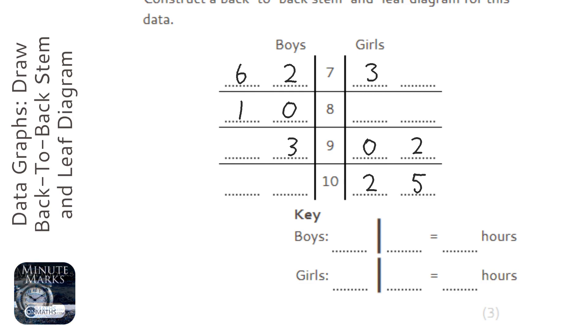I'm going to do the key for the girls first. I'm just going to pick a value - you don't even need to have a real value. So I'm going to pick the first one: 7 line 3 equals 73 hours. The reason we have a key is 7 line 3 could mean 7.3. Obviously, it doesn't on our stem and leaf diagram, but it shows the person reading it that it means 73.